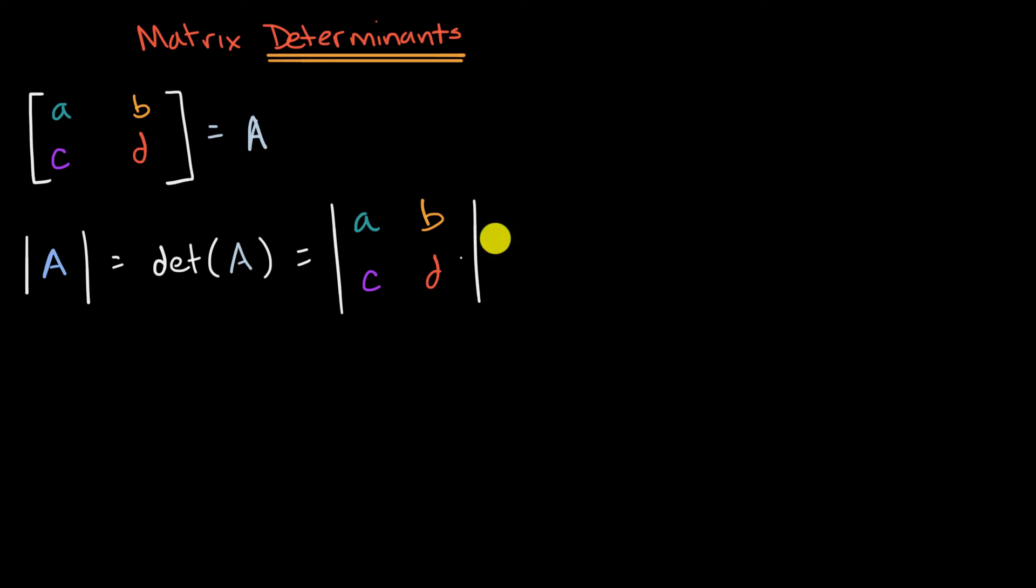This is defined as, and we'll see how it's useful in the future, the top left times the bottom right. So A times D minus the top right times the bottom left, B, C. So another way to think about it, it is just the product of these two minus the product of these two right over here.